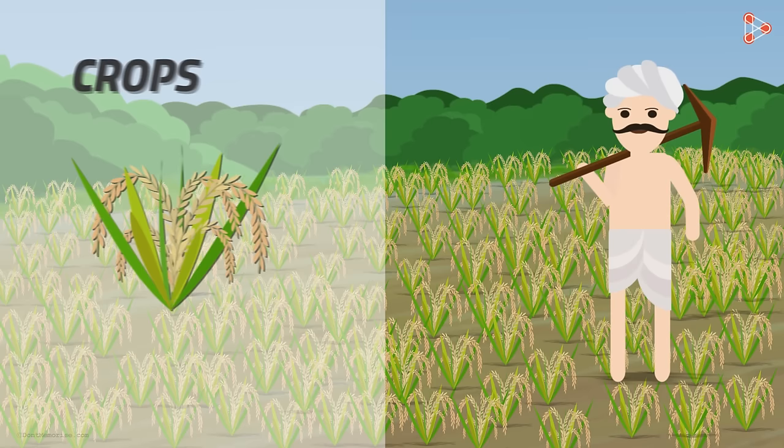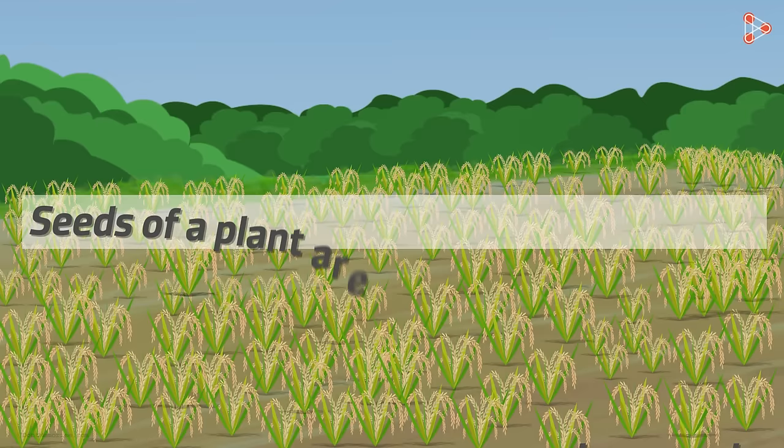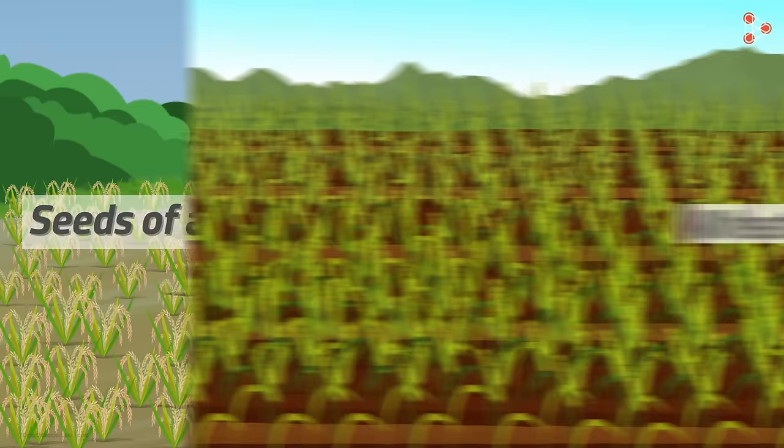So what is the most important part among all the components in agriculture? Of course, the crops! But what exactly do we mean by crops? When seeds of a plant are grown on a large scale, we call it a crop.